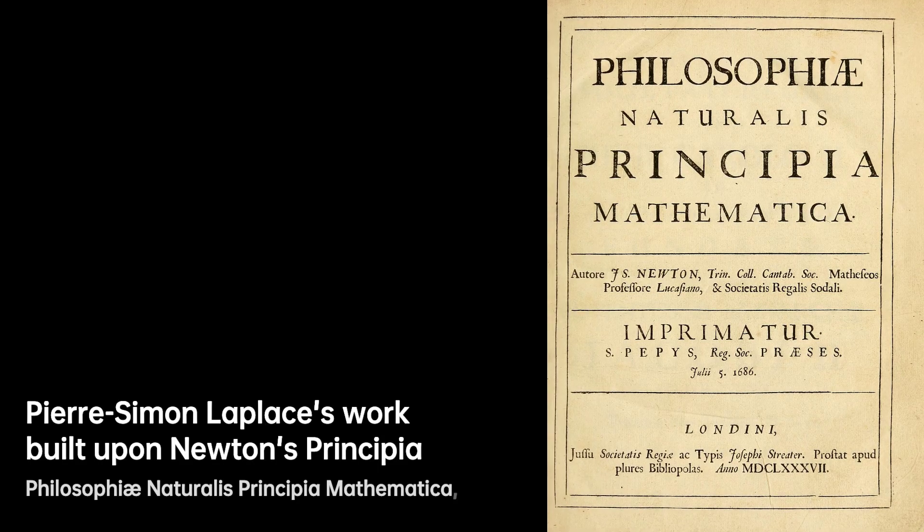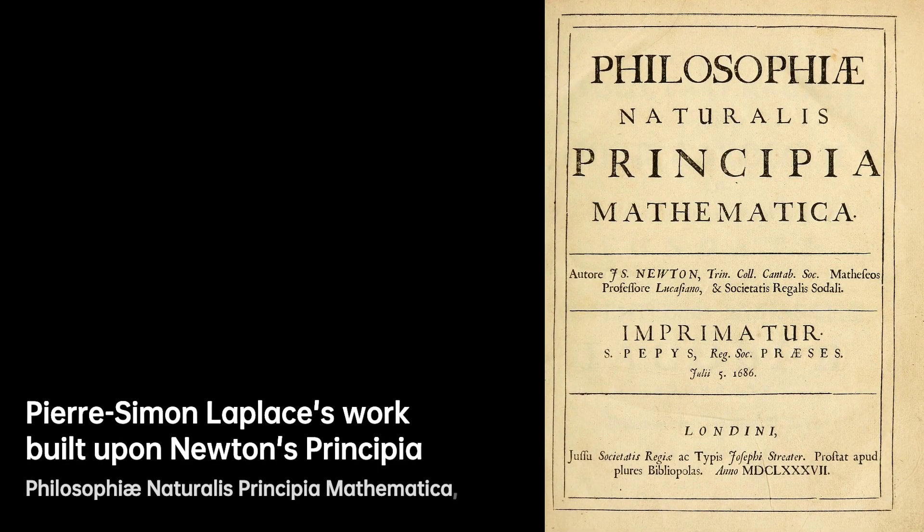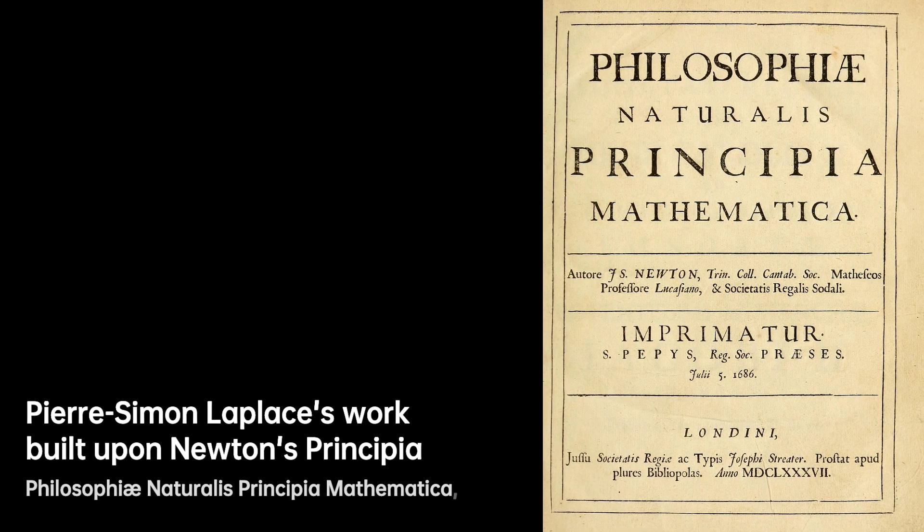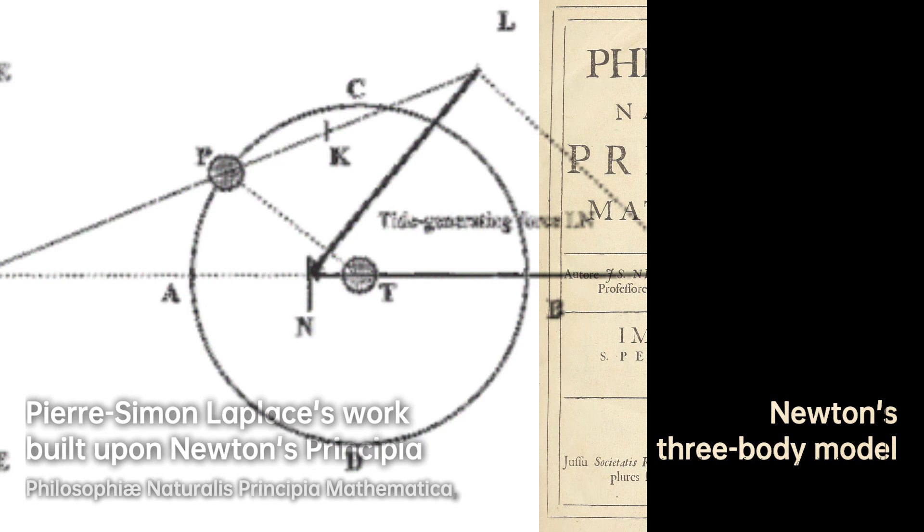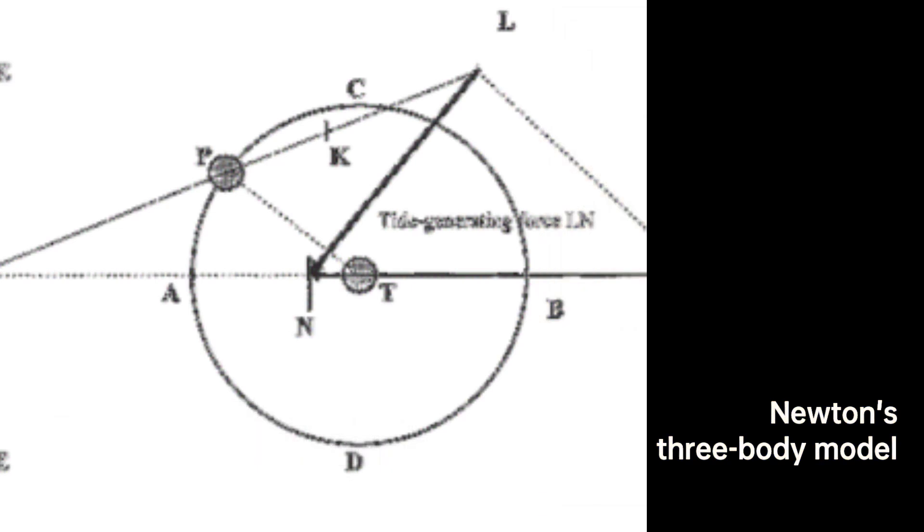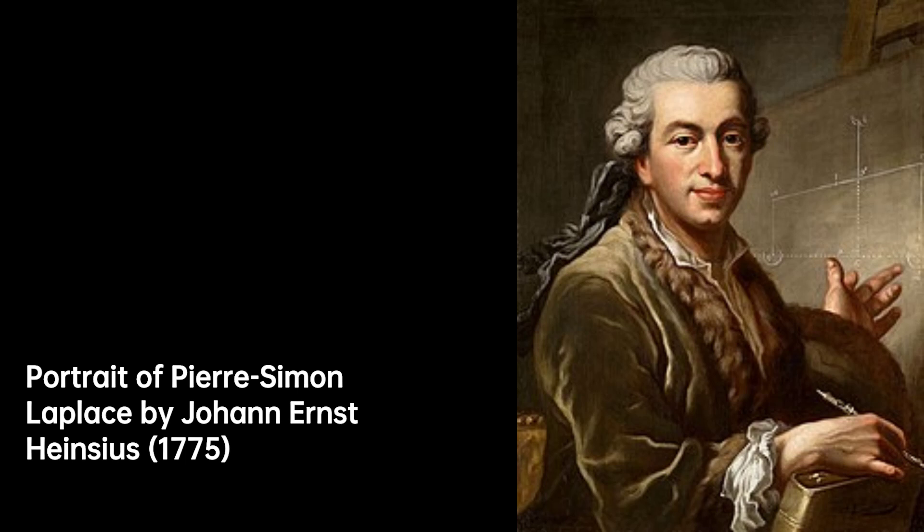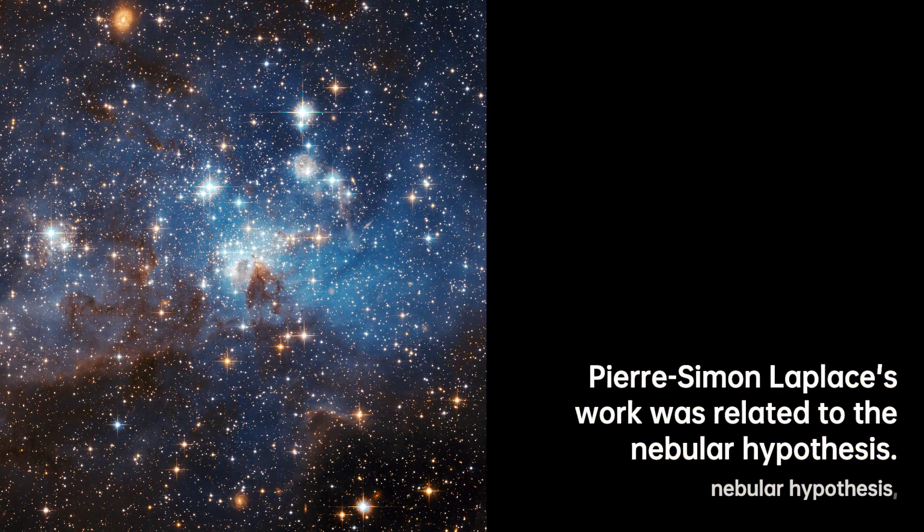In the late 18th century, a brilliant French mathematician named Pierre-Simon Laplace embarked on a groundbreaking scientific journey. Inspired by Sir Isaac Newton's laws of motion and law of universal gravitation, Laplace sought to unravel the mysteries of the solar system's stability. Newton had provided a derivation of Kepler's laws, but his cumbersome geometric reasoning couldn't account for the subtle interactions between planets. Laplace was determined to dispense with the notion of divine intervention and find a mathematical solution to ensure the stability of the solar system.